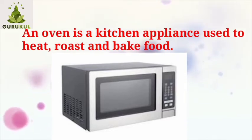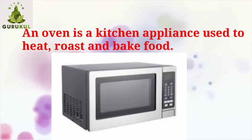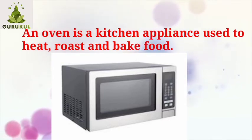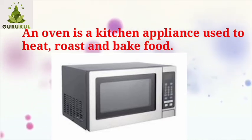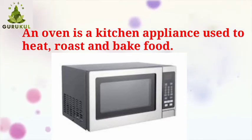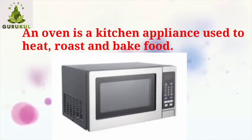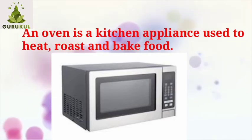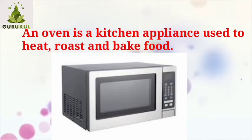An oven is a kitchen appliance used to heat, roast, and bake food. A kitchen appliance is a machine which is used in the kitchen, such as a fridge, food processor, etc. So an oven is a kitchen appliance which is used for cooking purposes. Ovens are closed heated containers which are used for heating, baking, and also for drying food.